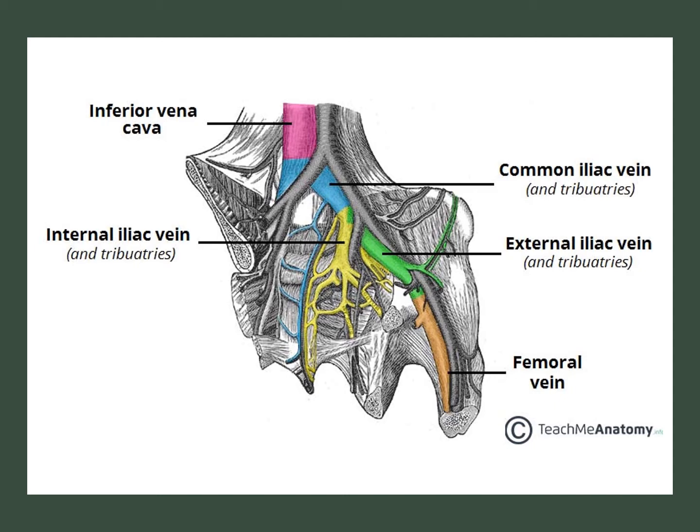First up is an anatomical review. We're going to start with the femoral vein — more precisely, the orange depicted vessel there, which is the common femoral vein. As we ascend towards the heart, as we pass underneath the inguinal ligament, we will come to the external iliac vein, depicted here in green.